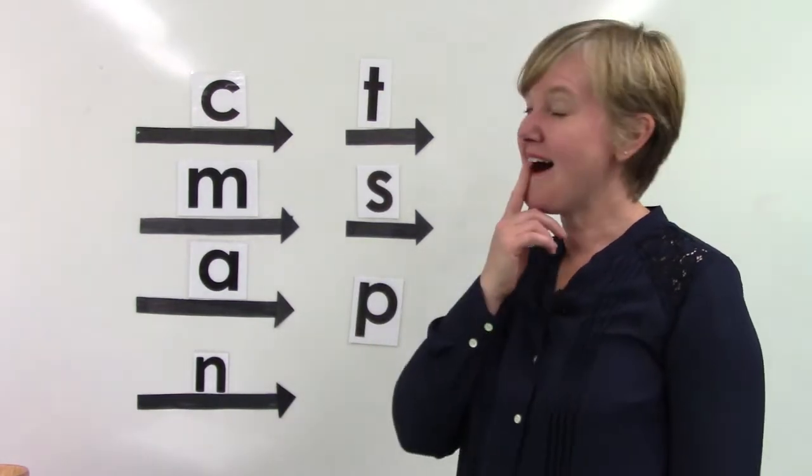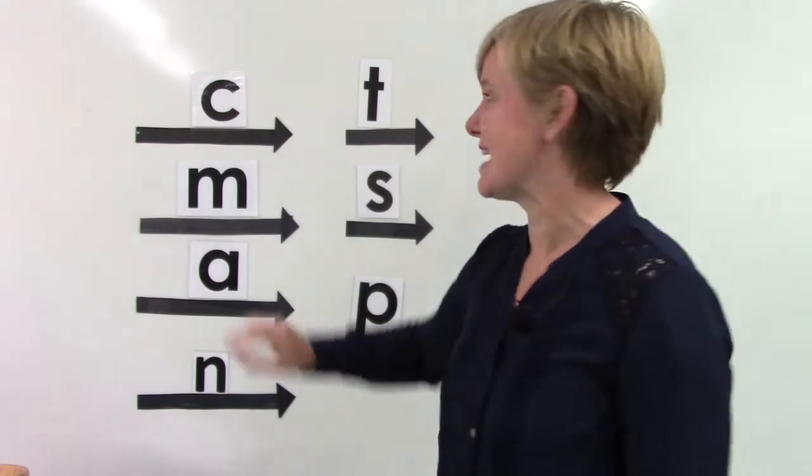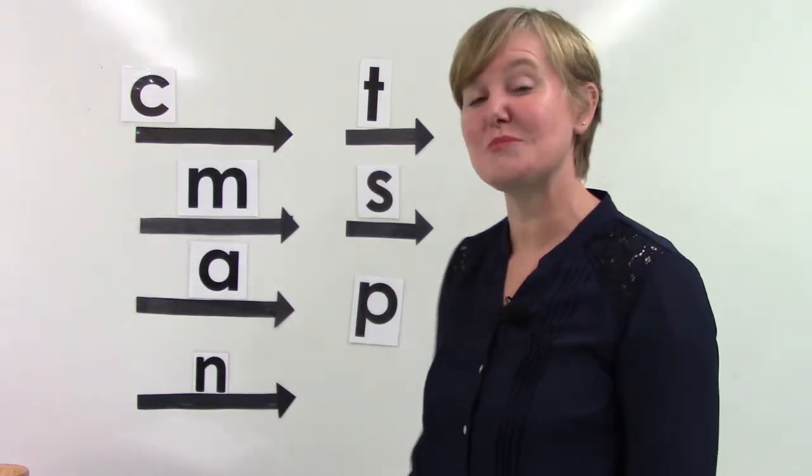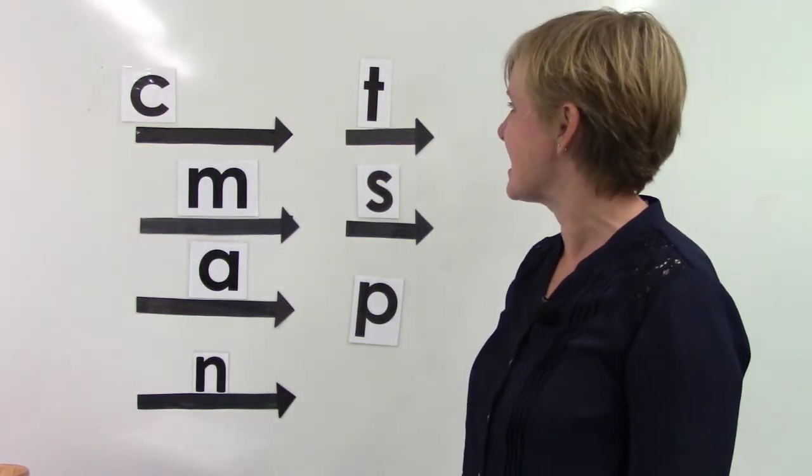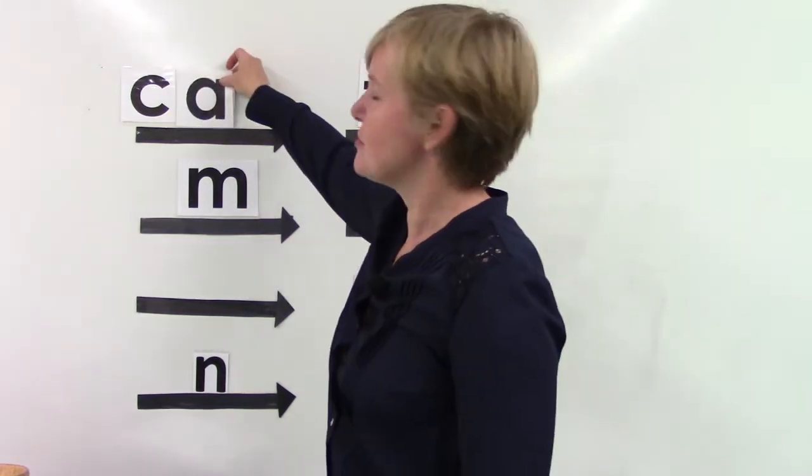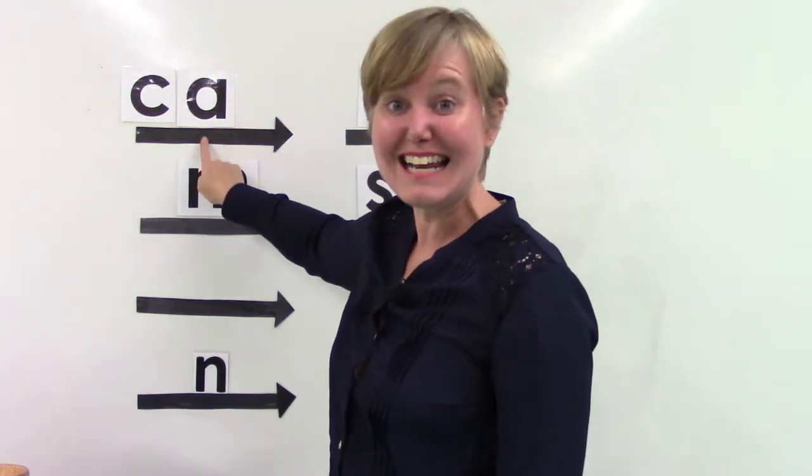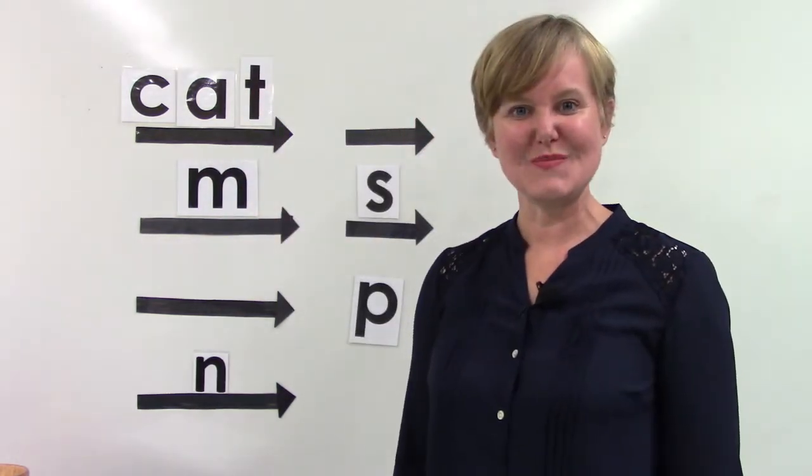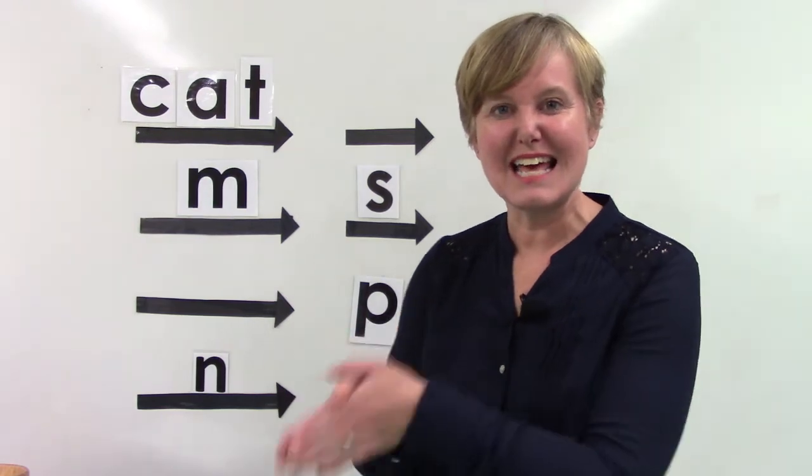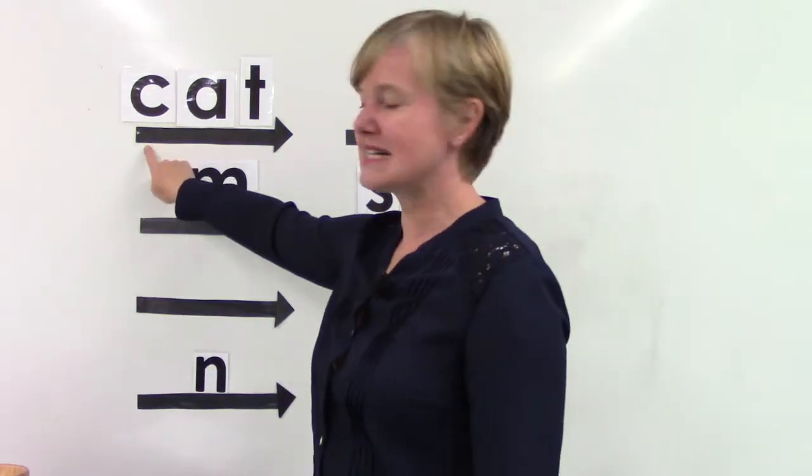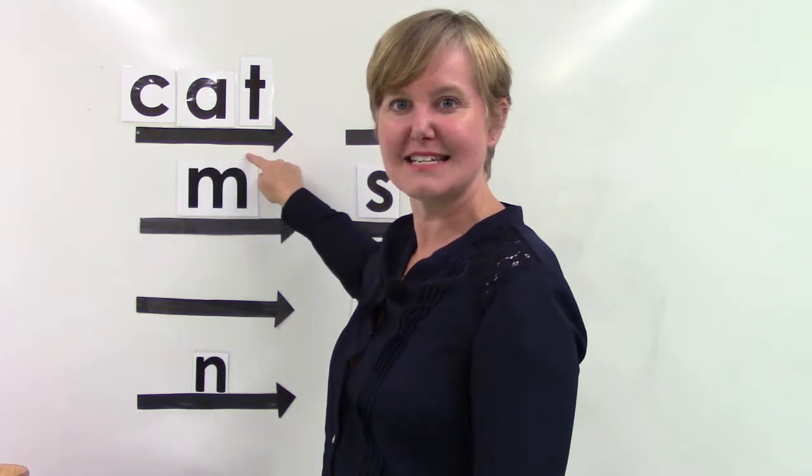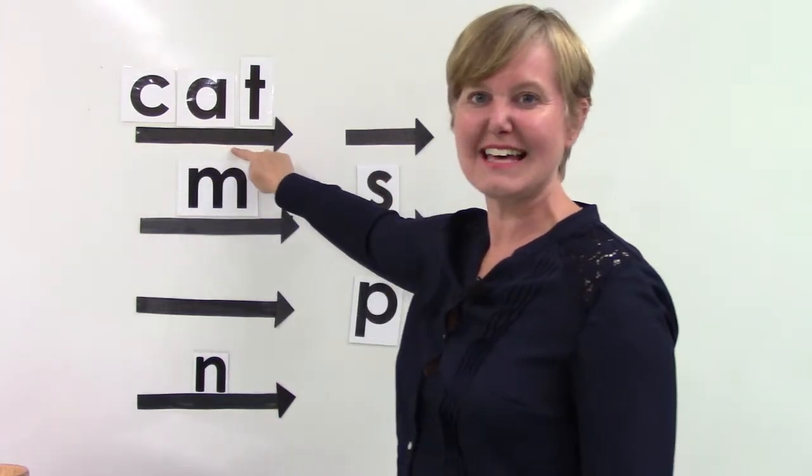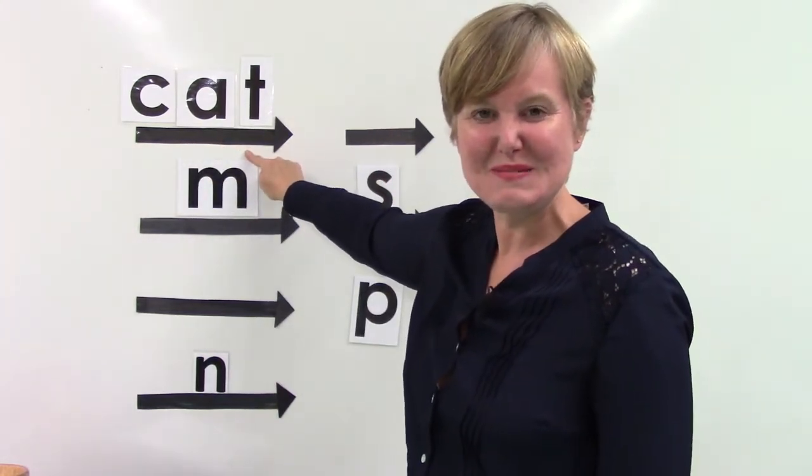Now I am going to use our new sound K, and it is going to start all of our words today. It's going to be the initial or beginning sound. I think I'm gonna put an A in the middle, I need a vowel, and then a T at the end. Let's say all of the sounds. K, A, T. Blend them slowly. K, A, T. Say it fast. Cat.